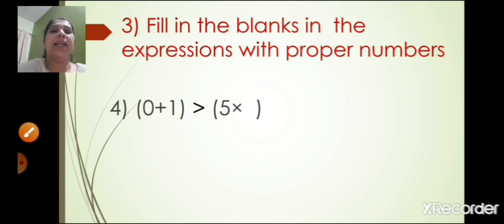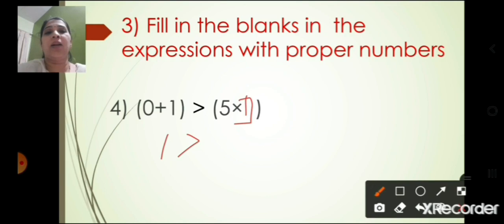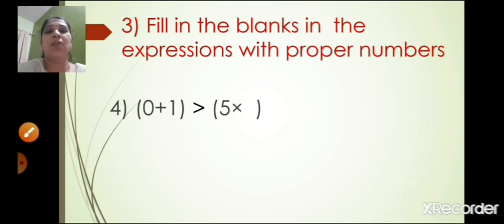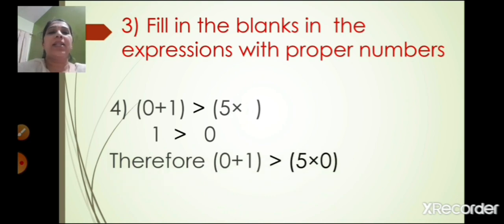The fourth one: 0 plus 1 is greater than 5 into box. Now 0 plus 1 is 1. We need a number such that 1 is greater than 5 into box. Only 0 satisfies this — five zeros are 0. So 1 is greater than 0. Therefore 0 plus 1 is greater than 5 into 0. The answer in the box is 0.